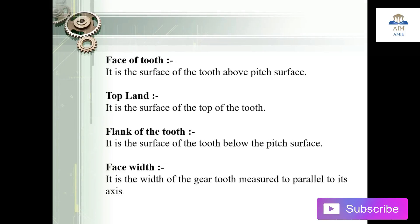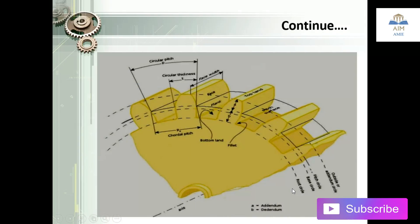The face of the tooth is the surface above the pitch surface. The top land is the surface of the top of the tooth. The flank of the tooth is the surface of the tooth below the pitch surface. The face width is the width of the tooth measured parallel to its axis. These are the terminologies required while designing a gear.